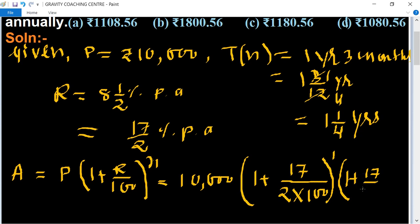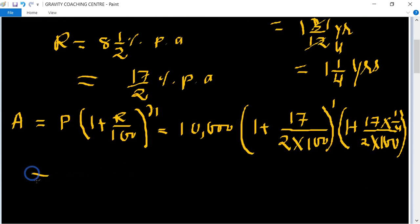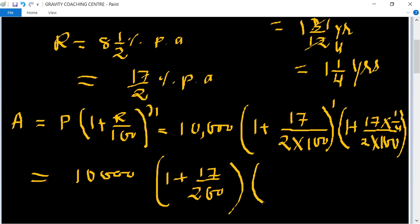...17/(2×100) × 1/4 = 10,000 × (1 + 17/200) × (1 + 17/800).